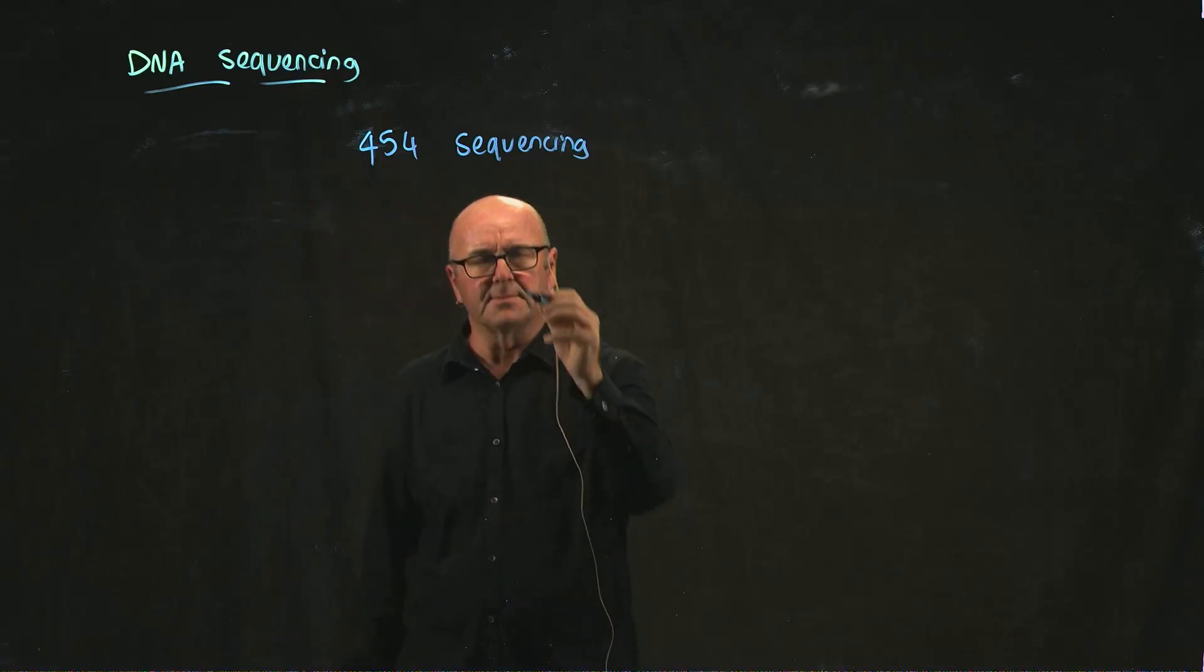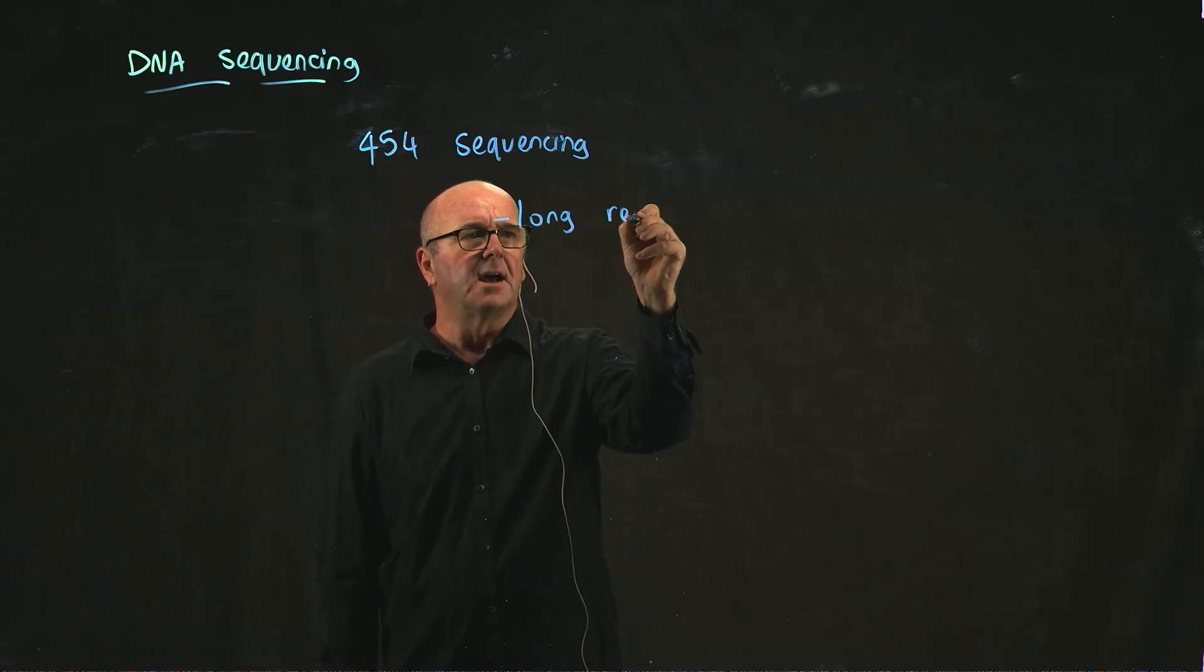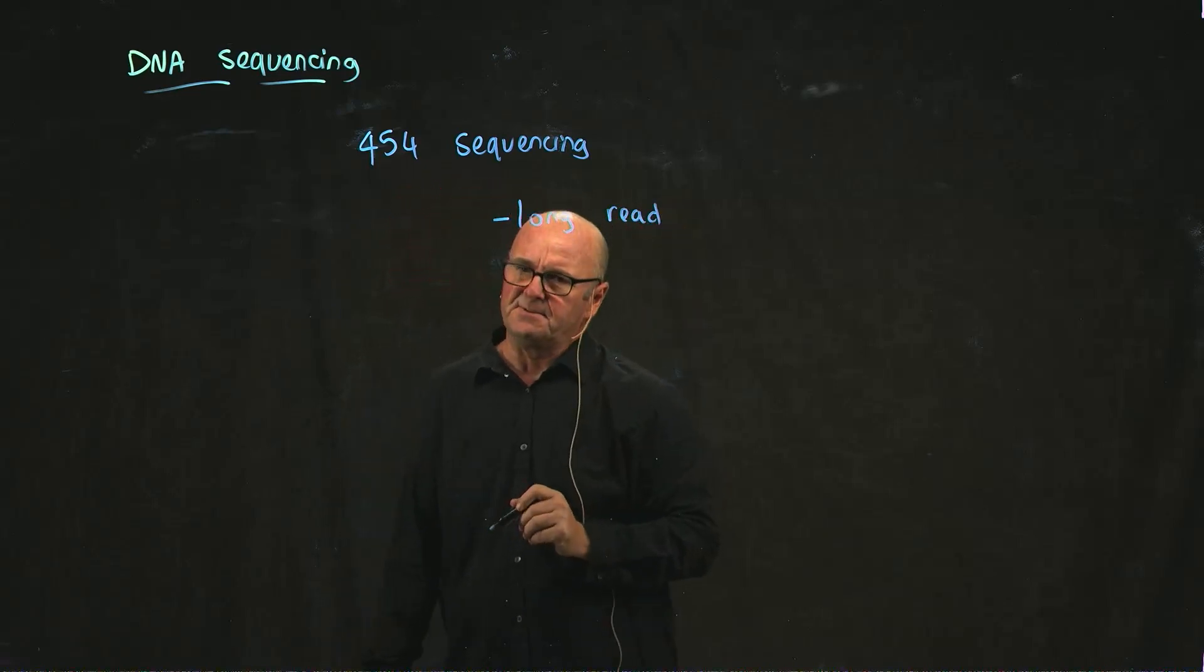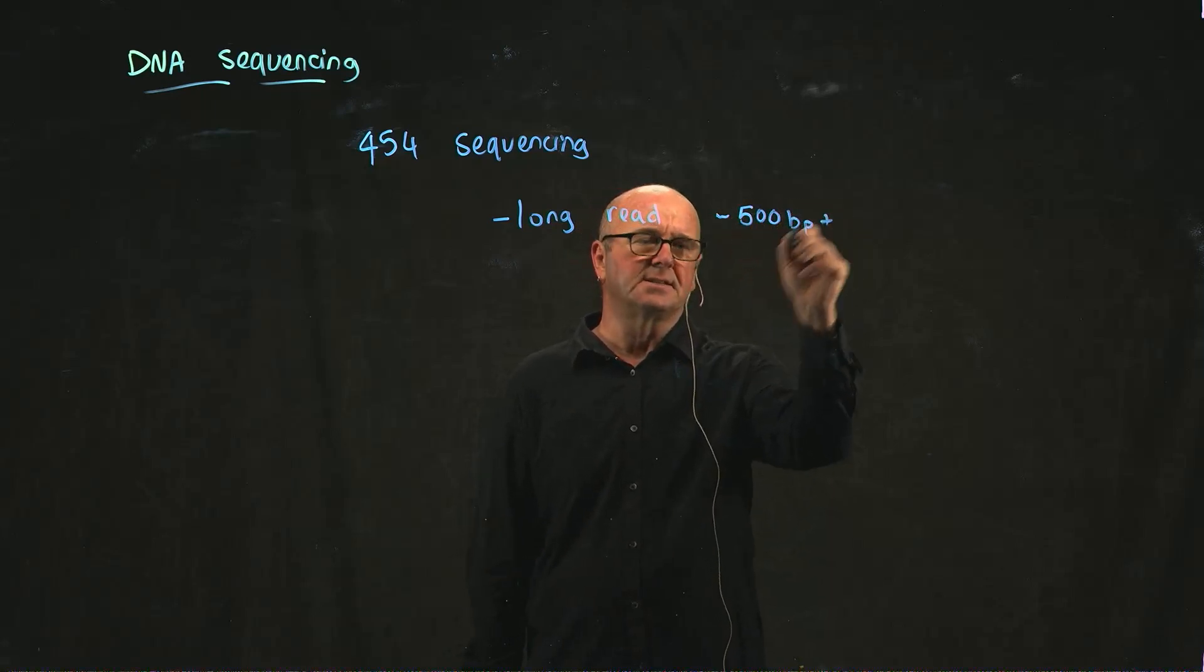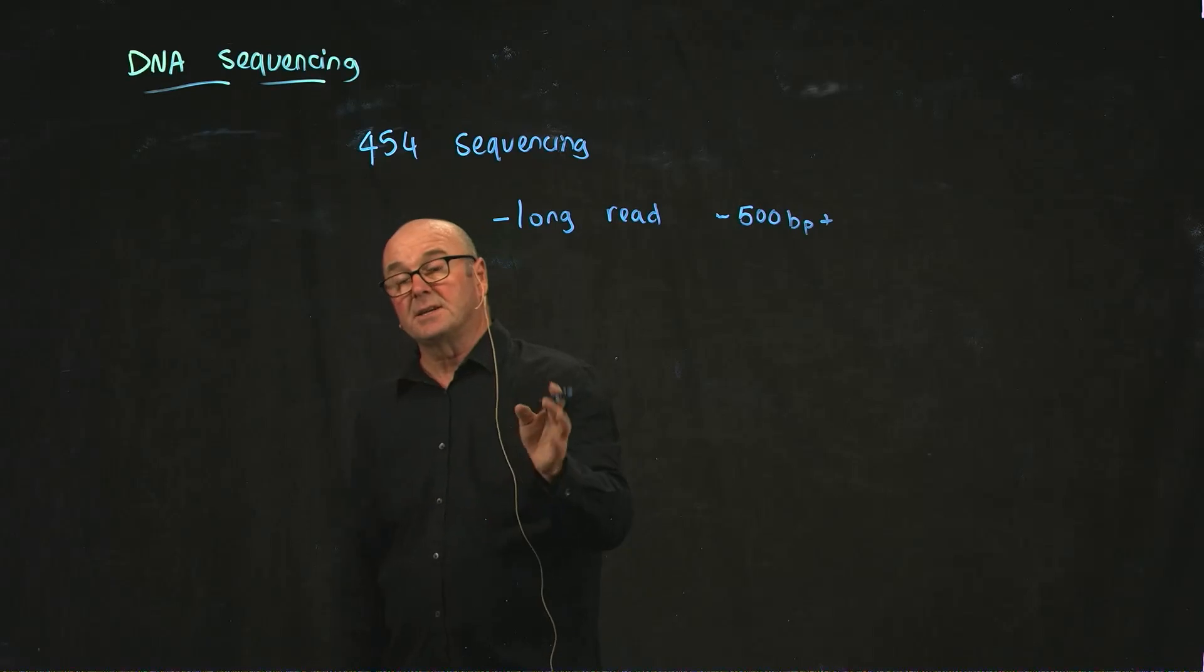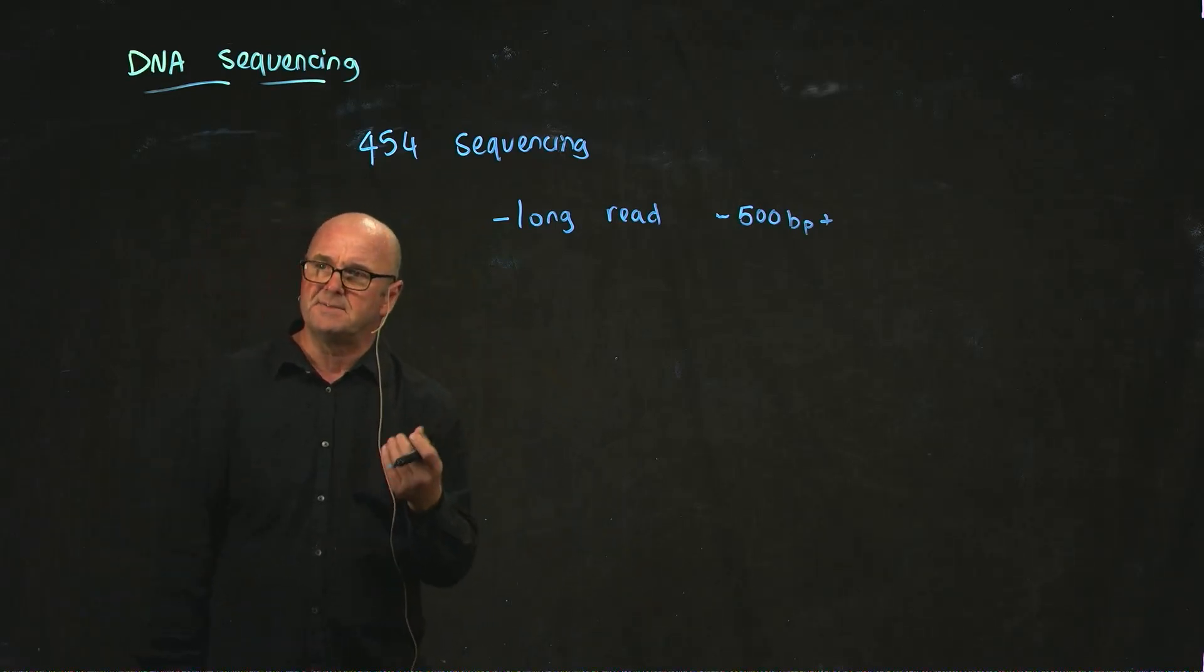It also had some advantages. It could do relatively long reads. Towards the end of the life of 454, they were getting up to about 750, but typically 500 bases onward. When it started out in the early 2000s, it was about 50 bases.